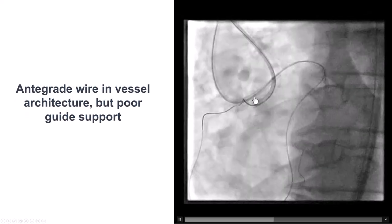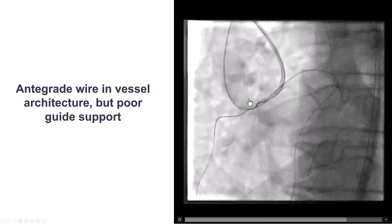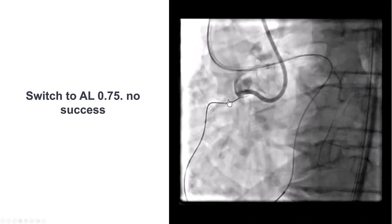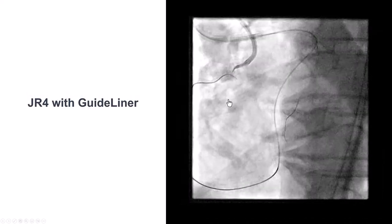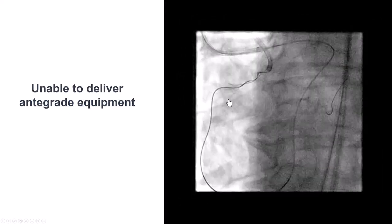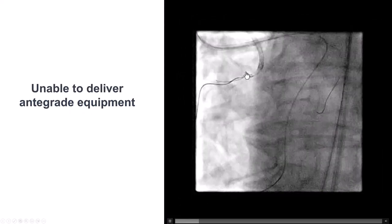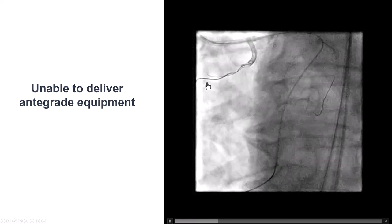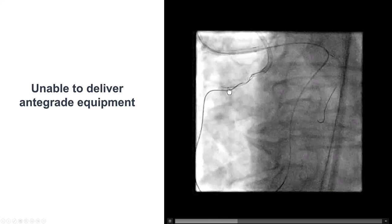Now we're able to get the antegrade gear close to the retrograde, but we have very poor support and difficulty advancing equipment. Trying to switch to different guides did not work. We used the JR4 with a guide extension, and now we're able to advance the guidewire — after a long time and multiple wires — with the antegrade wire coursing along the course of the retrograde guidewire.